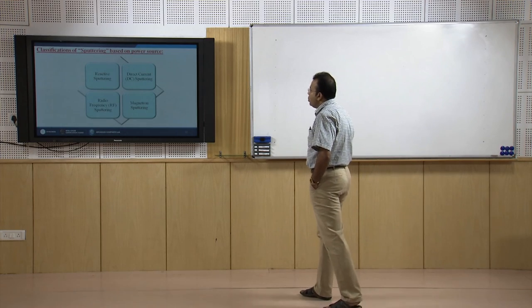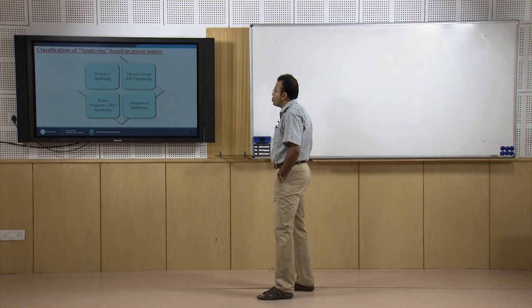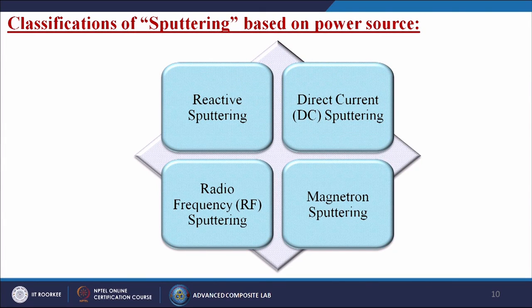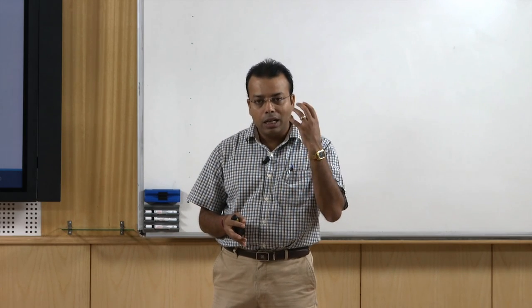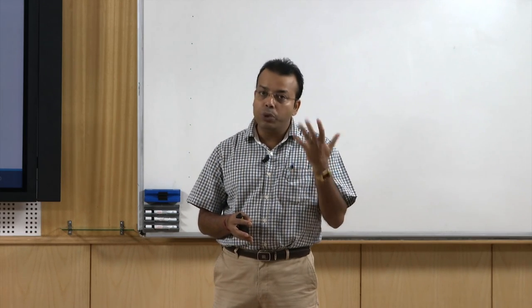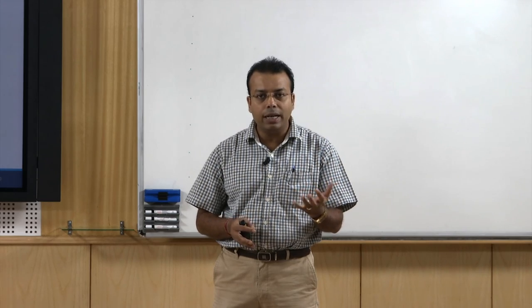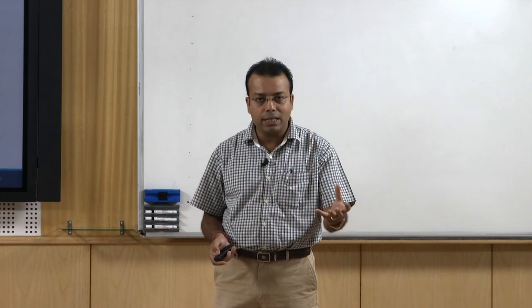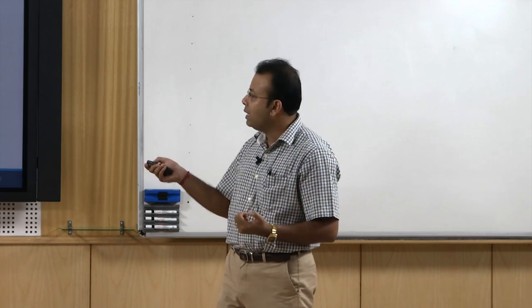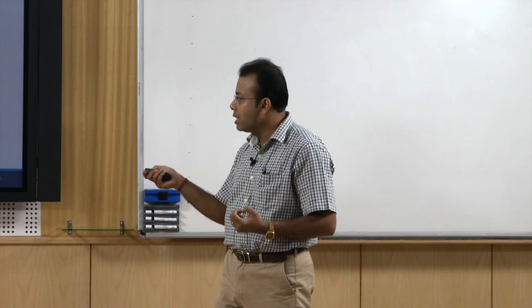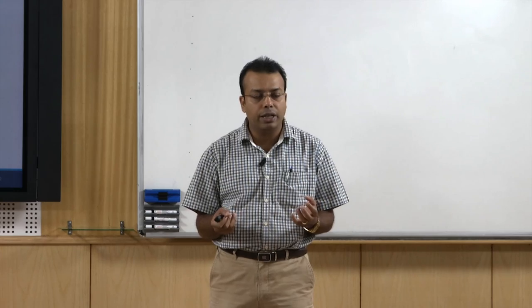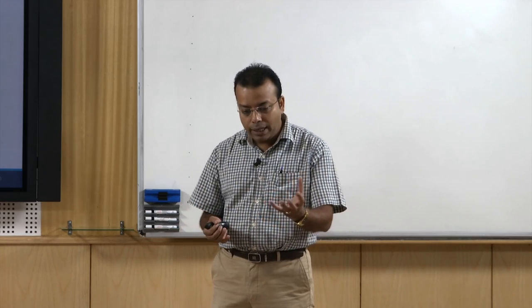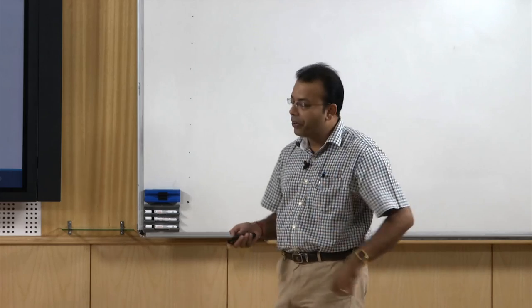We need to know the different types of sputtering based on power sources. First is reactive sputtering, then direct current sputtering, magnetron sputtering, and radio frequency sputtering. We have to agitate the target material — depending on how we agitate it, we make these classifications. We can use heat energy, DC current, magnetic force, or radio frequency so that atoms can directly come from the sputtering target.